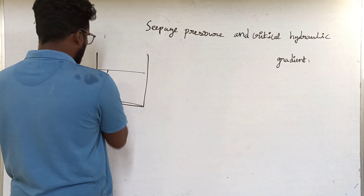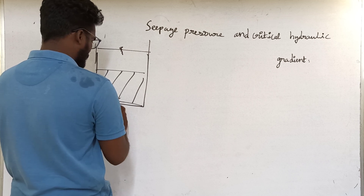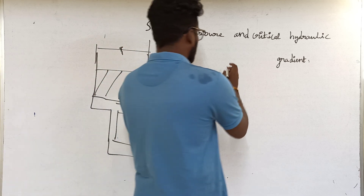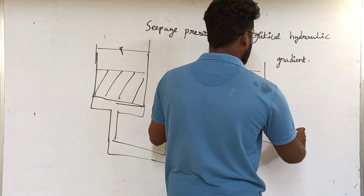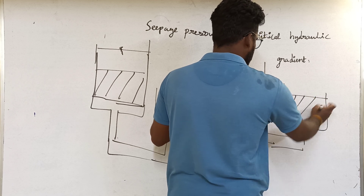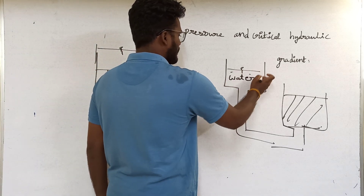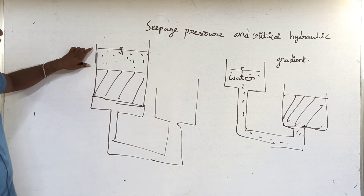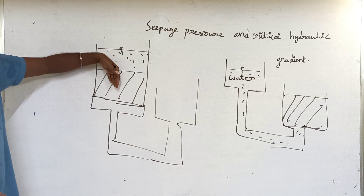This is a soil sample. In this diagram, water is here and the soil sample is here. There is potential energy in the water. Due to this potential energy, water will try to percolate through the soil in the downward direction — in the direction of gravity.